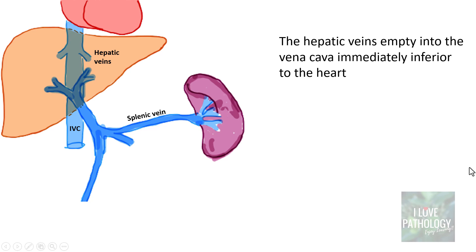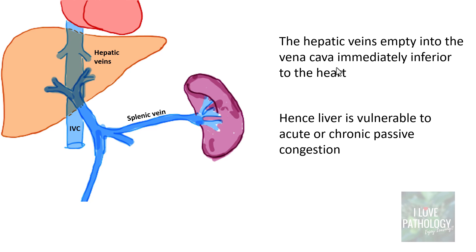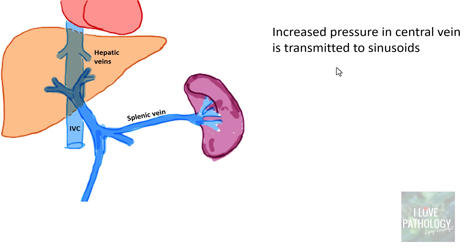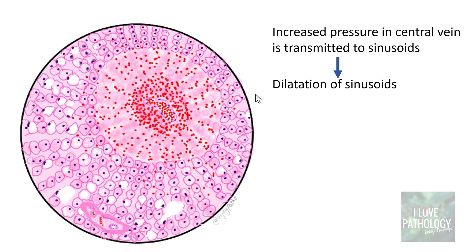We all know that the hepatic veins empty into the vena cava immediately inferior to the heart, and thus the liver is very vulnerable to both acute and chronic passive congestion. Whenever there is right heart failure, this increased pressure in the central vein is directly transmitted to the sinusoids, thereby resulting in dilatation of sinusoids.